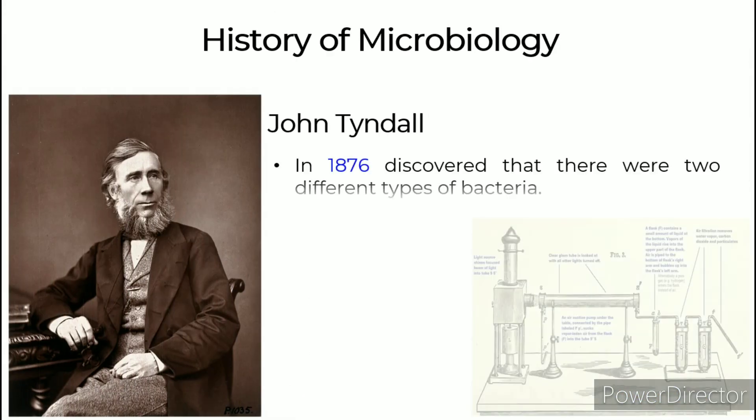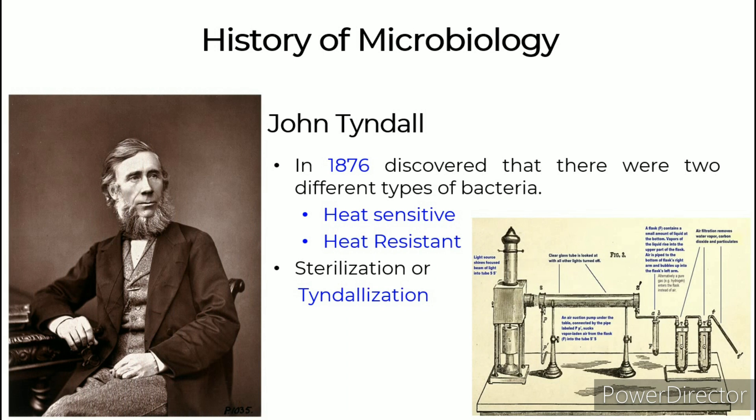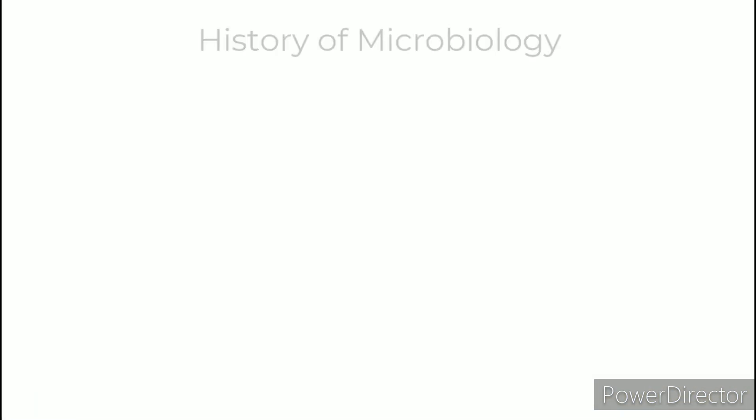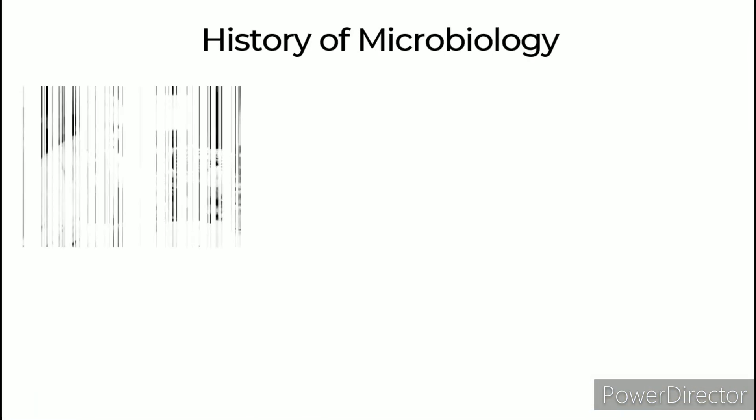John Tyndall, in 1876, discovered that there were two types of bacteria: heat-sensitive and heat-resistant. He demonstrated that alternating processes of heating and cooling, if repeated five times, can kill all endospores. This is known as the sterilization process or Tyndallization.